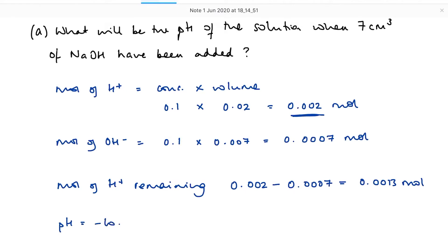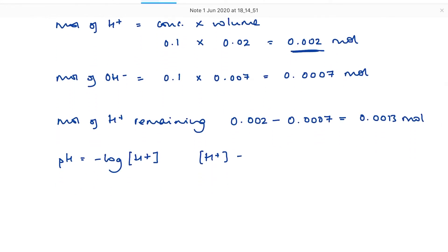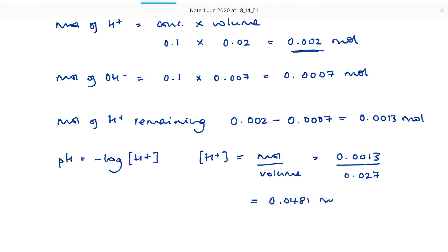pH equals minus the log of the hydrogen ion concentration — not moles, but concentration. So the concentration of the hydrogen ions equals number of moles divided by the volume. Number of moles is 0.0013, and the total volume is 27 centimetres cubed — I started with 20 cm³ of acid and added 7 of the alkali — so that's 0.027 decimetres cubed. The concentration of the hydrogen ions is 0.0481 mol/dm³, so pH equals minus log(0.0481), which comes out to be 1.32.